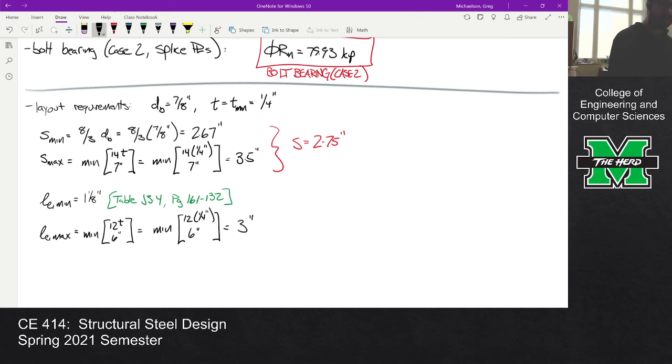And le_max is the minimum of 12*t and 6 inches, which is 3 inches. So we got to be between 1 and 1/8 and 3 inches. For this problem, le the edge distance was actually 1.5, so we met our layout requirements.